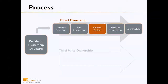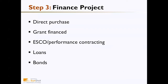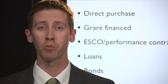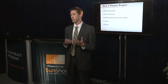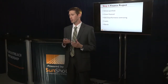Step three is financing the project. As addressed in previous lessons, options include direct purchase, grants from nonprofits or other organizations — there are grants specifically supporting PV installation on schools — energy service company or ESCO performance contracting where a third party delivers a certain amount of energy, loans, and bonds, which some municipalities have the ability to issue to finance the system.